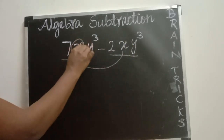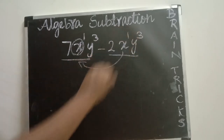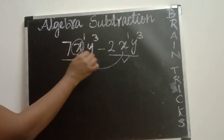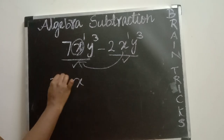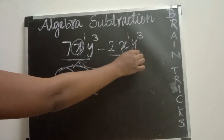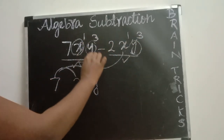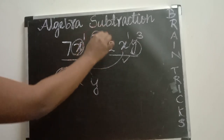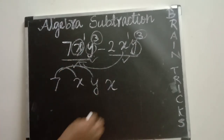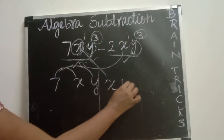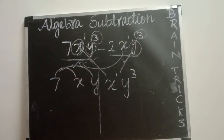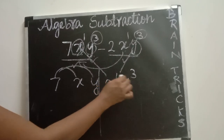Next, we have to check the power: x power 1 here, and x power 1 here also. Then you have to check the second variable. This term has two variables x and y. Here also we have variable y. Check the power of y: y power 3 here, and here also y power 3. So this term has variable x power 1 and y power 3, and this term also has x power 1 and y power 3. Both terms have the same variables and powers.